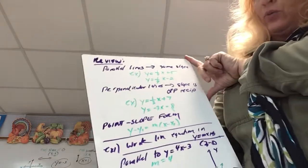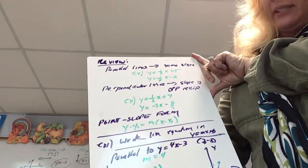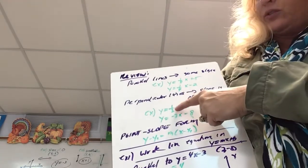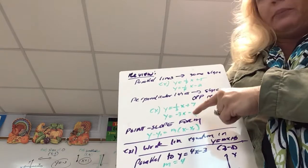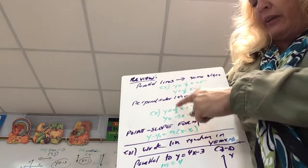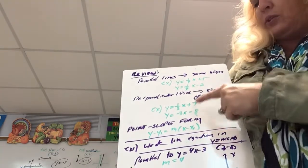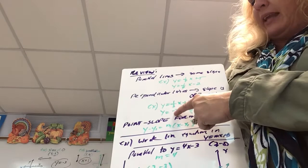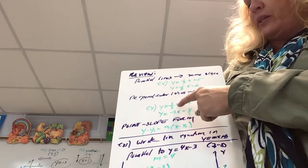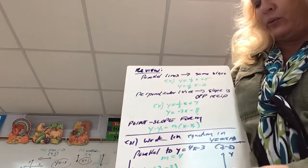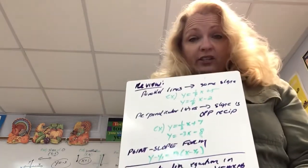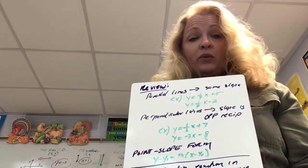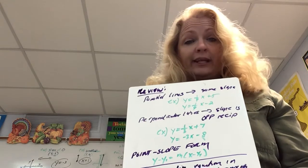For example, y equals one-third x plus 7 — the slope of that line is one-third. A line perpendicular to that would have an opposite slope, so it would be negative, and the reciprocal of one-third is negative 3. And as a quick reminder: what do we need to write the equation of a line? We need slope and a point.